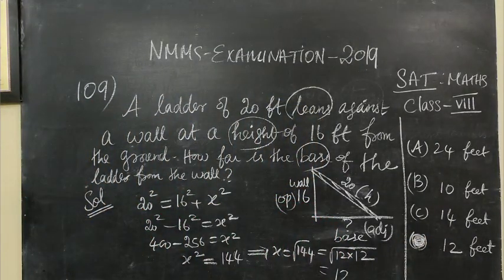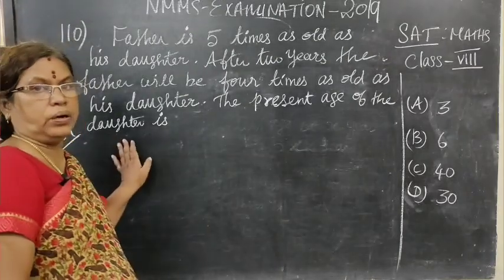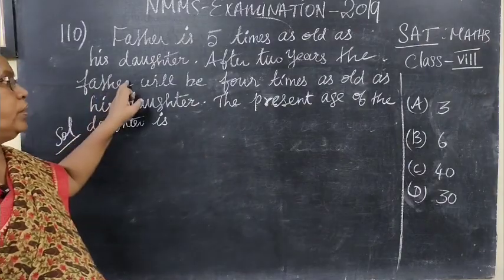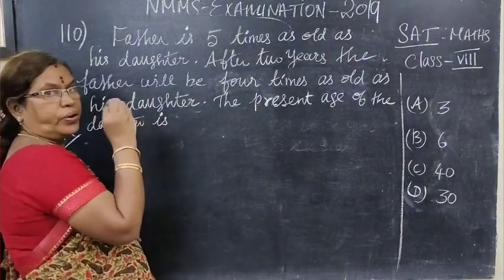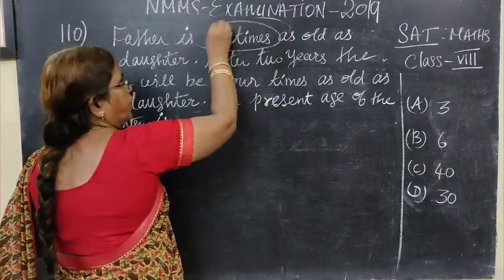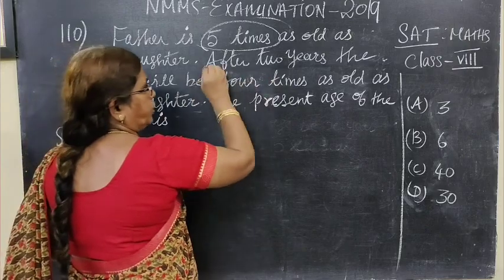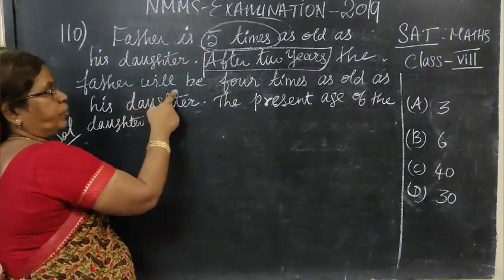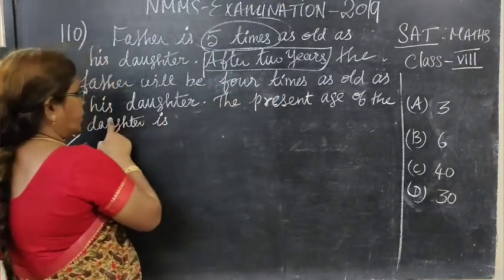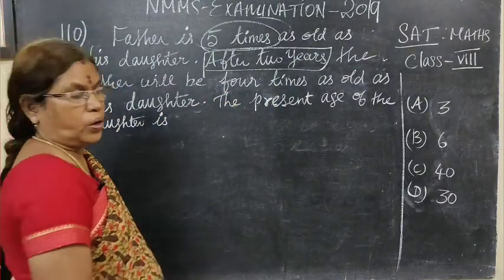Now the last question, question number 110. Father is 5 times as old as his daughter. After 2 years, the father will be 4 times as old as his daughter. Find the present age of the daughter.